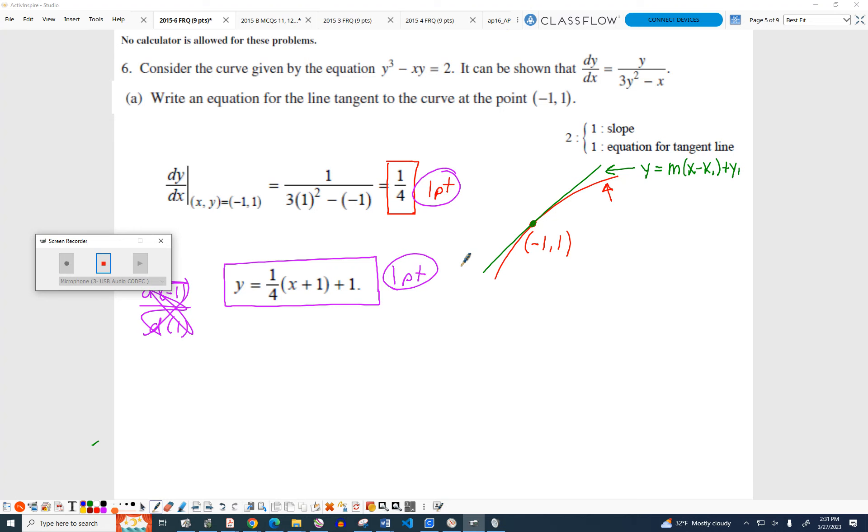Okay, so number 6, part A. This is write an equation for the line. So somebody after school asked me a question and I said you just need to read slower. It says,